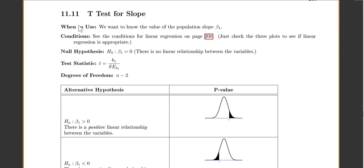So our t-test for slope, when to use it, we want to know the value of our population slope, beta 1. The conditions, remember we did conditions for linear regression back on page 200. They get very involved. We'll just check our three plots quickly to make sure we don't see anything really bad in our three plots, and that will be good enough for this class. The null hypothesis will always be that our population slope is zero, or there's no linear relationship between the two variables. My test statistic will be my sample slope over its standard error, but we're just going to use computer output, so you don't even have to worry about that. And degrees of freedom would be n minus 2.